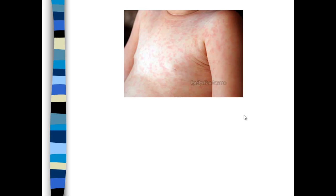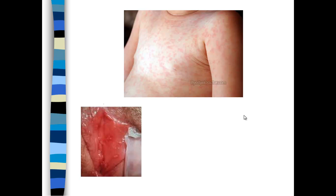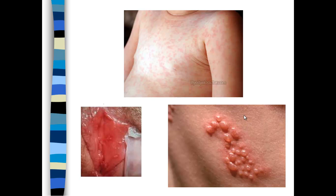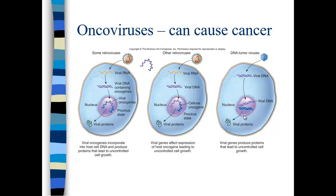Here's an example of roseola — just a red rash predominantly on the body, with a characteristic rash on the cheeks. Here's a herpes virus on the vagina of a patient with very painful lesions. And here's shingles, which comes from chickenpox and occurs later in life after a patient has had chickenpox or the chickenpox vaccine.